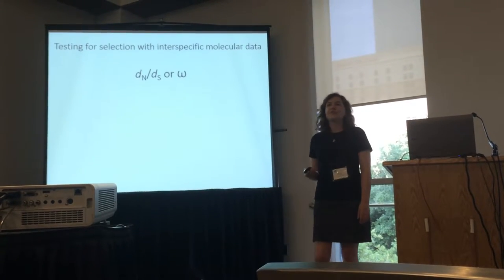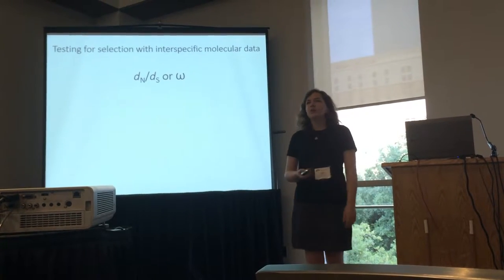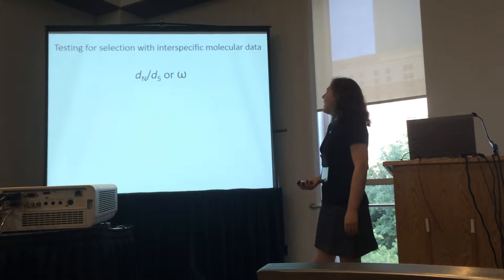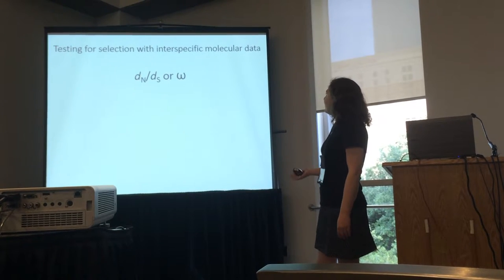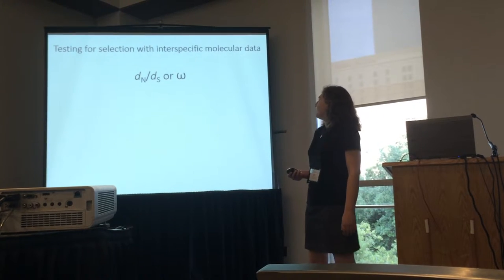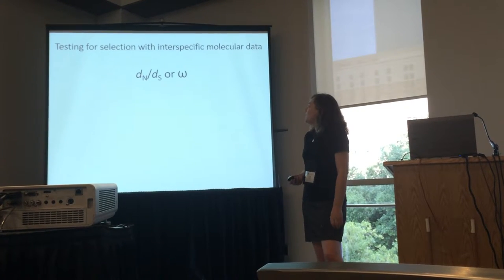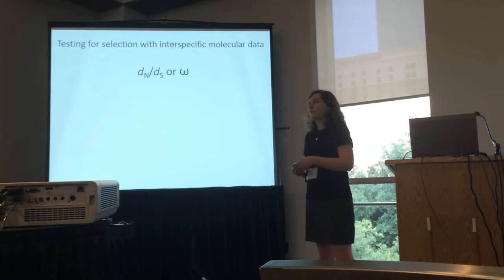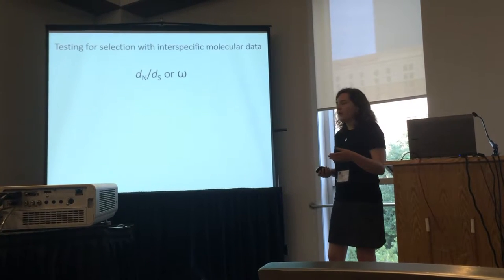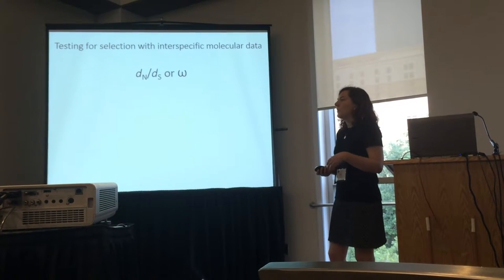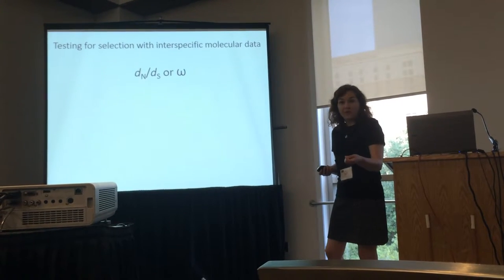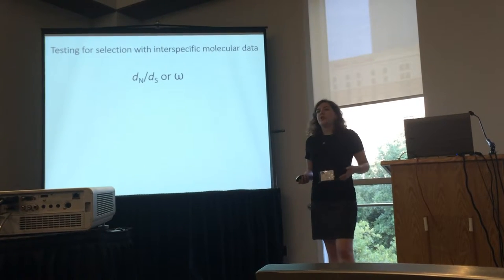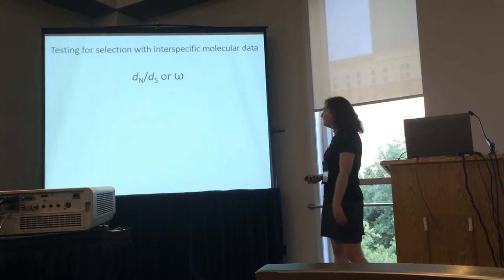How can we test for selection with this data? When you have interspecific molecular data like this, we use the parameter omega, or dN/dS, which is the ratio of non-synonymous or amino acid-modifying substitutions over synonymous or silent mutations.